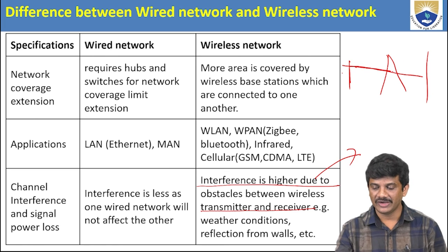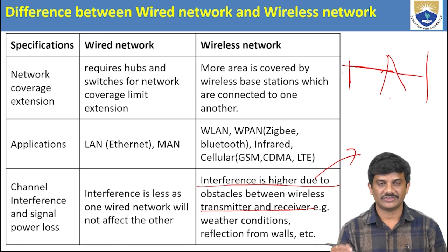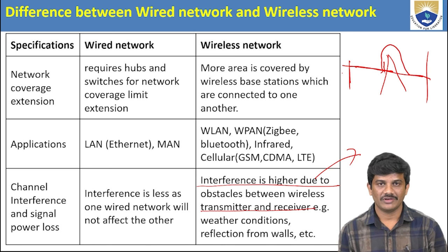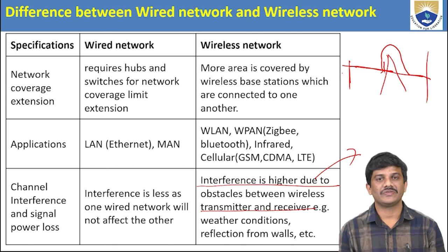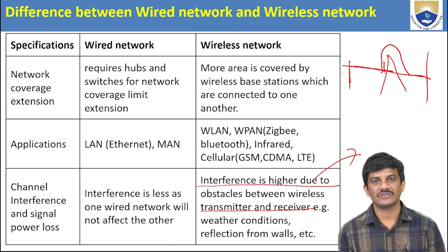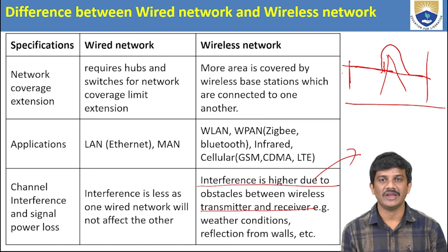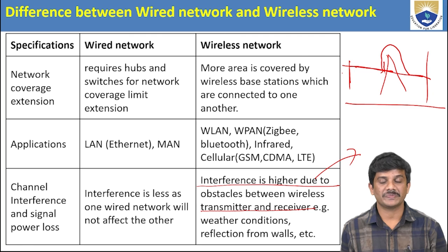When a signal touches a building, the signal strength decreases. Then as it travels further to the receiver, the signal strength is much lower compared to wired networks. As distance increases, signal strength decreases. That's why interference is higher in wireless compared to wired networks.